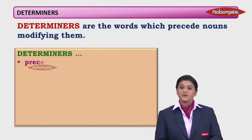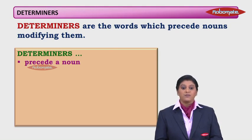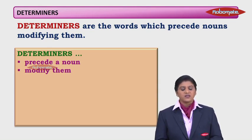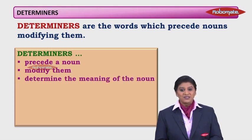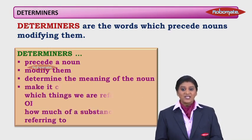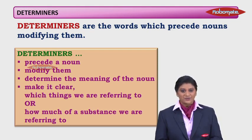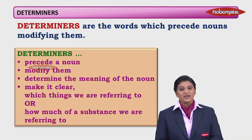First of all, determiners precede a noun. By precede, we simply mean they come before a noun — it is not necessary that it comes exactly before a noun, but it comes before a noun. Secondly, it modifies them. Determiners give the meaning of the noun. It makes it clear which thing we are referring to or how much of a substance we are referring to. So basically, a determiner is a word that precedes a noun and modifies it, helping us know the meaning a little better.